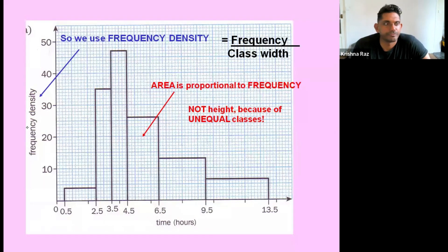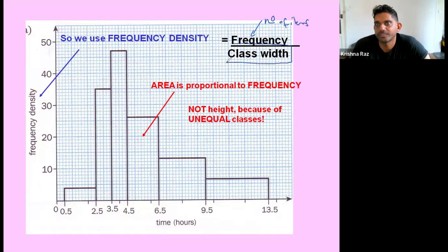So the frequency is the number of items of data. Number of items. Whilst the class width is simply the width of the category.